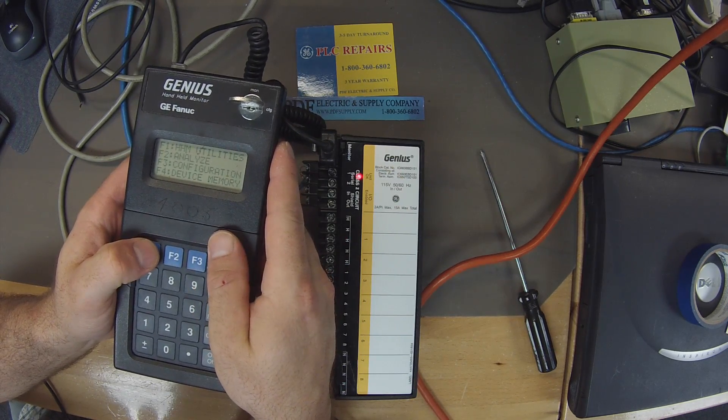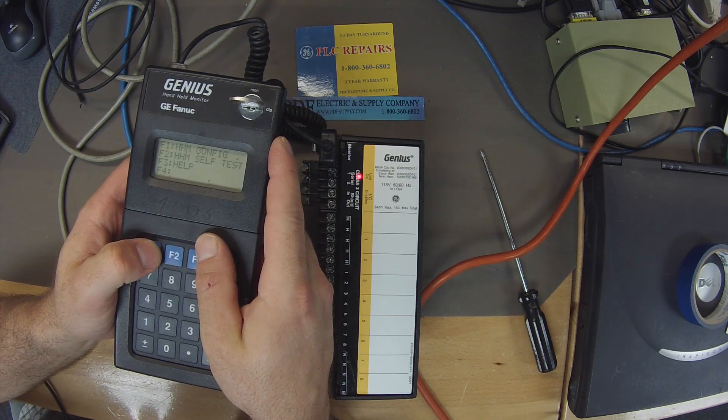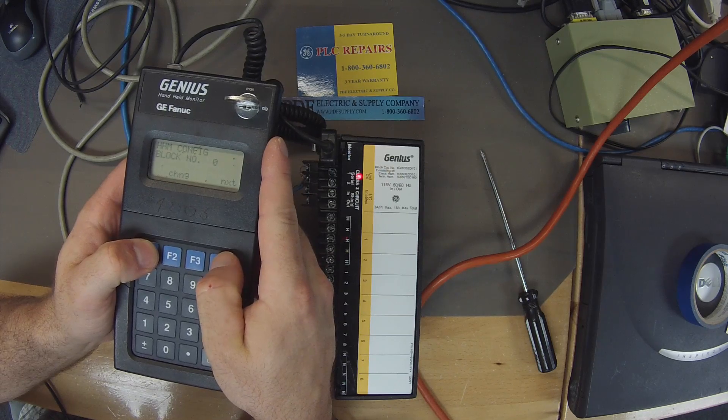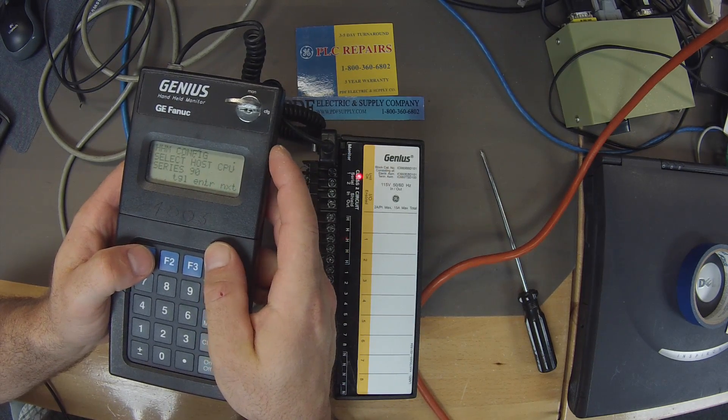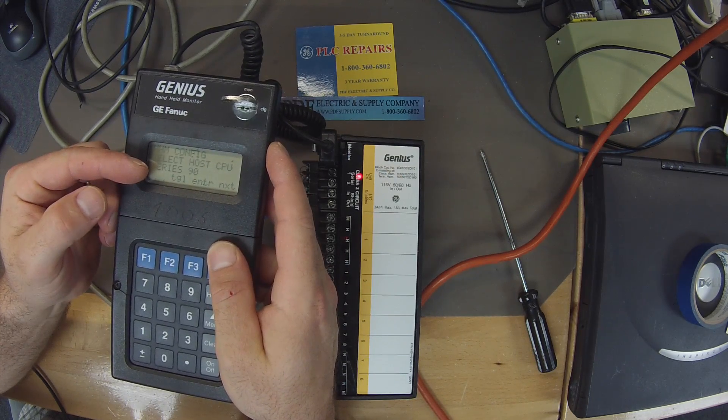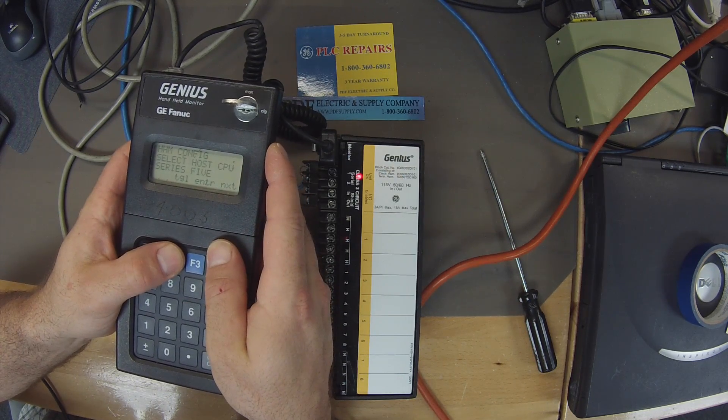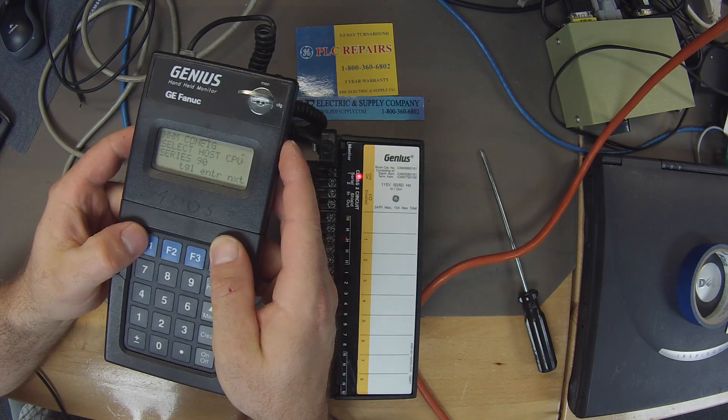Before I do that actually I'm going to go to F1, handheld monitor, F1 again handheld monitor configuration. Next. Next. I want to make sure that we are all on the same page and that your host should be series 90. I'm going to toggle around so you can see that there's different series that you can choose. We're going to use series 90 for this test.